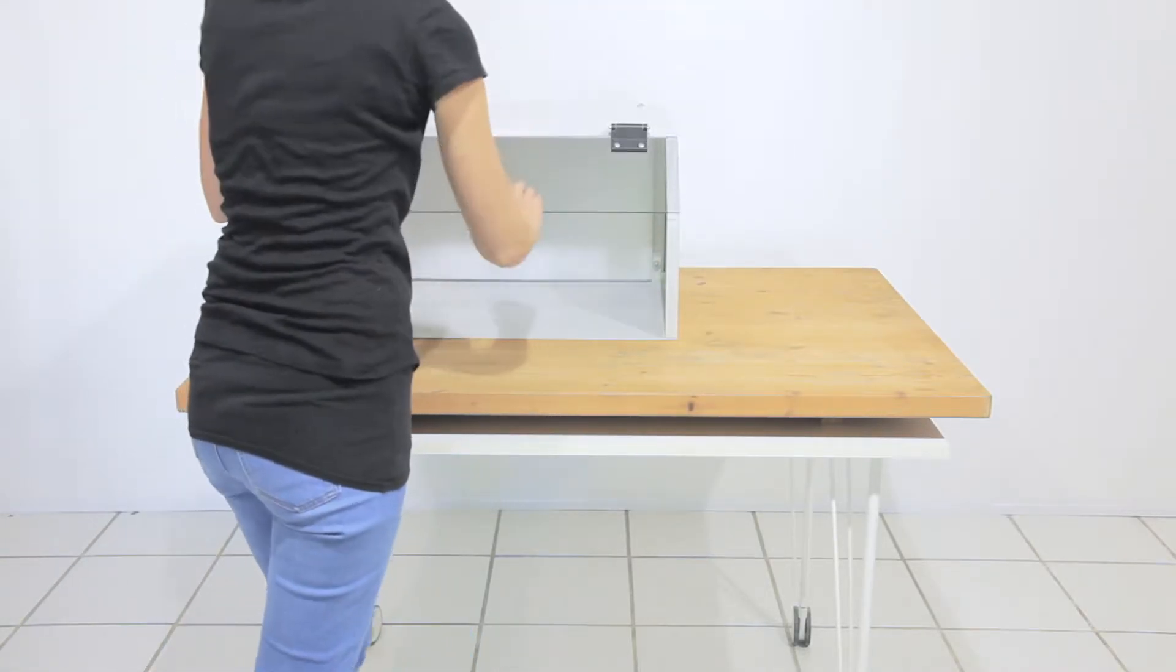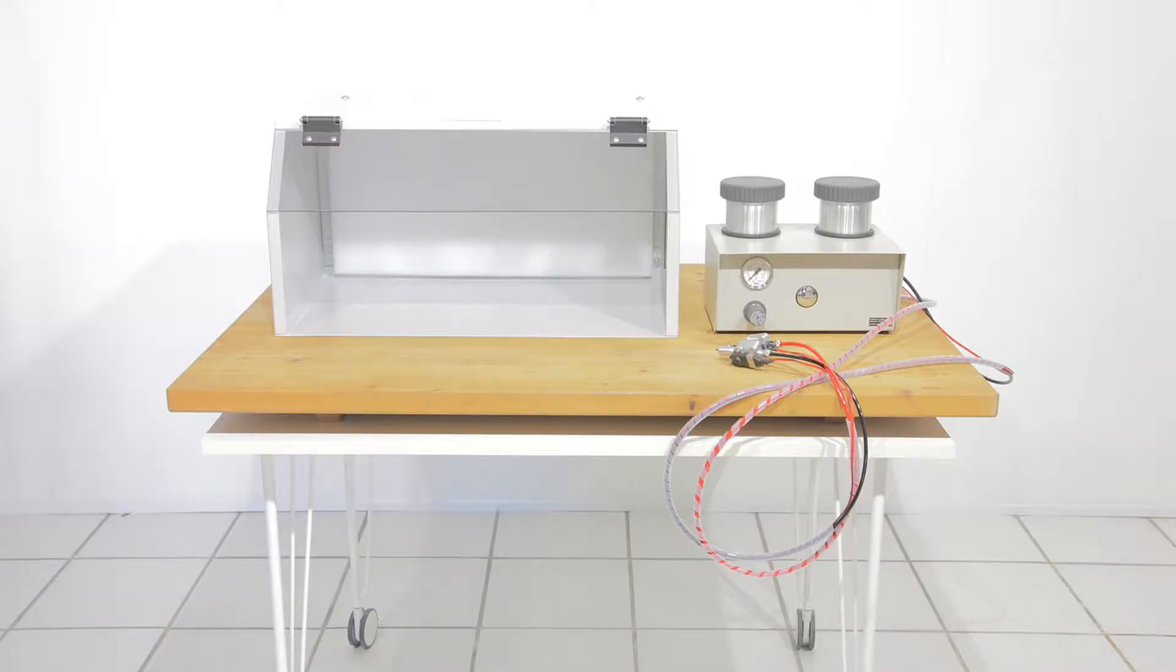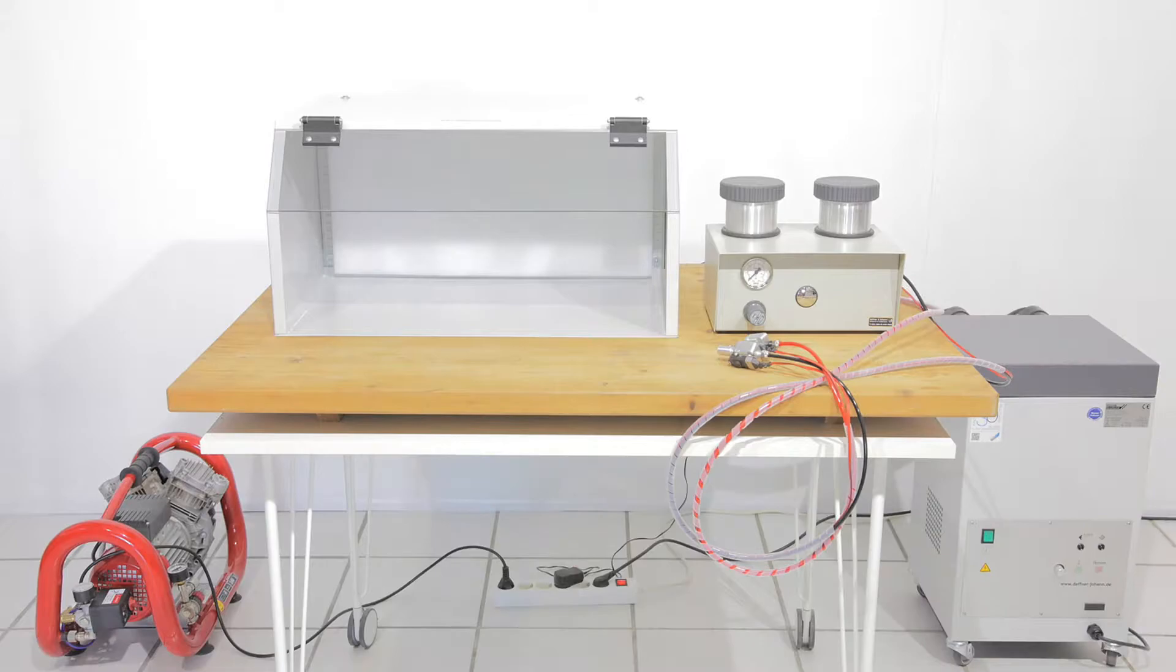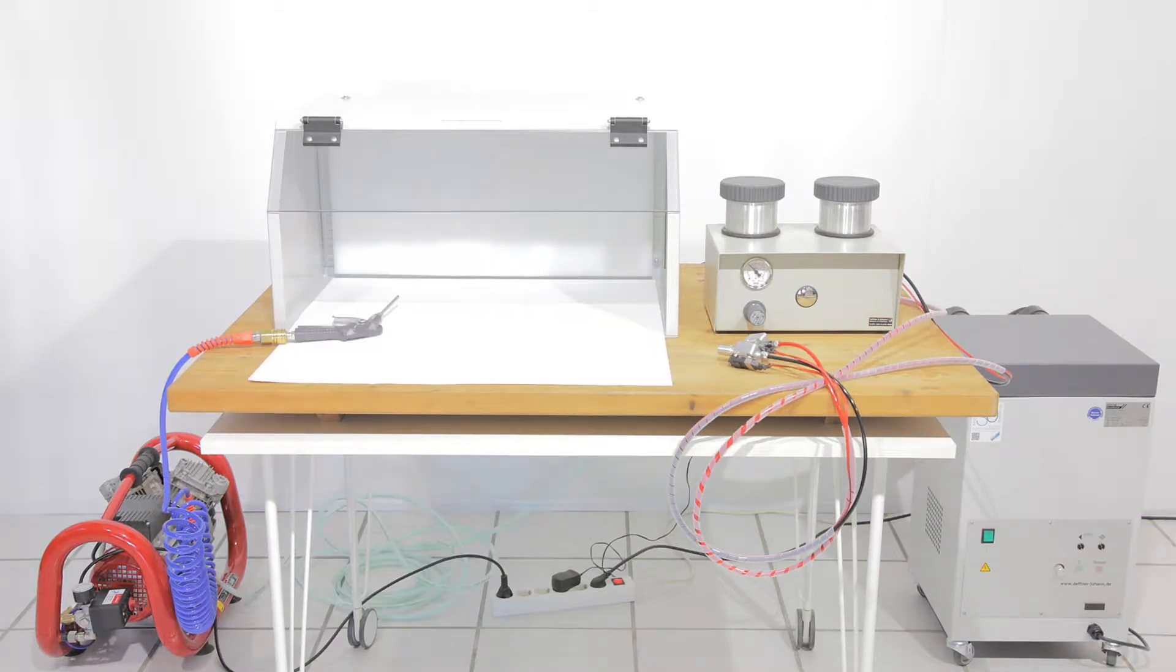Fume hood with a preliminary filter mat placed inside, air blaster with two chambers, compressor, mobile extraction and filter unit, as well as all required tubes.